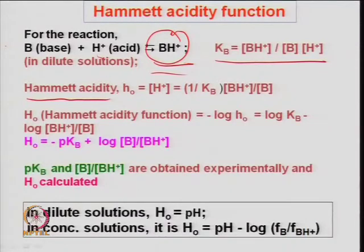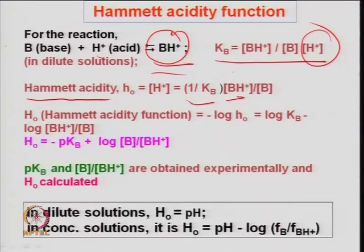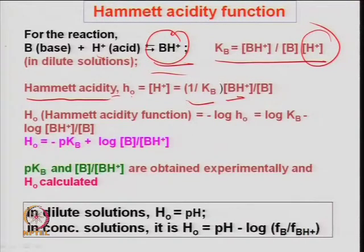The Hammett acidity function H₀ represents the concentration of acid sites H⁺. It is given by 1/K_B times concentration of BH⁺ divided by concentration of B — these can be determined experimentally. One can easily use titration equations to calculate. The Hammett acidity is just the pH for dilute solutions and is calculated based on minus log of H₀.